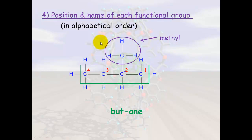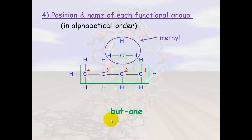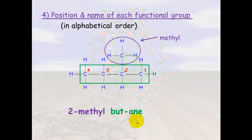Back to our earlier example — the next step is the position and name of each functional group. Once we've positioned any double or triple bonds, we need to position and name the functional groups. Our functional group here is the methyl group and it's on position two carbon. We've already named our longest carbon chain as butane, so we now write 2-methylbutane — in other words, a methyl group on position two of a four-carbon single-bond structure.